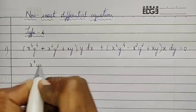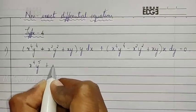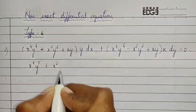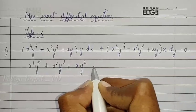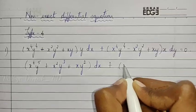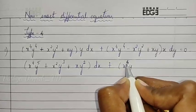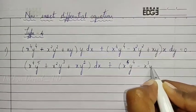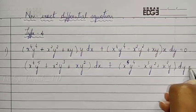After multiplying, we get: x⁴y⁴⁺¹ = x⁴y⁵ plus x²y²⁺¹ = x²y³ plus xy² dx, plus x⁴⁺¹y⁴ = x⁵y⁴ minus x³y² plus x²y into dy.